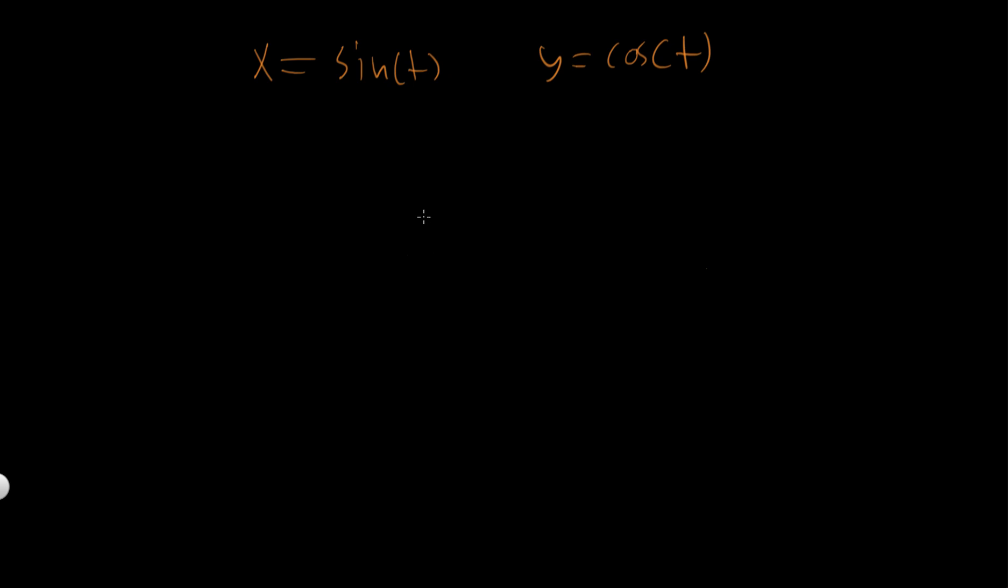So let's see. One thing we know is we know that sine squared of anything, so sine squared of let's just say theta, plus cosine squared of theta is equal to 1. So this expression is always true.